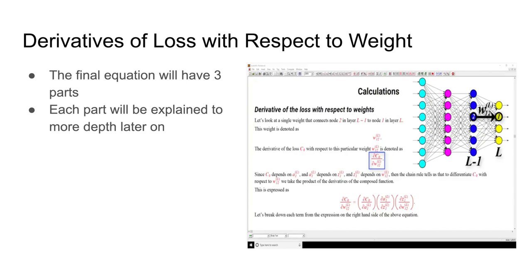First, we'll be calculating the derivatives of the loss with respect to the weight. The boxed equation in the picture demonstrates the derivative of the loss with respect to one particular weight. When calculating the partial derivative, the equation shown in the blue box is used. By using that equation for one single node, you're essentially calculating the derivative of the loss with respect to each particular weight.